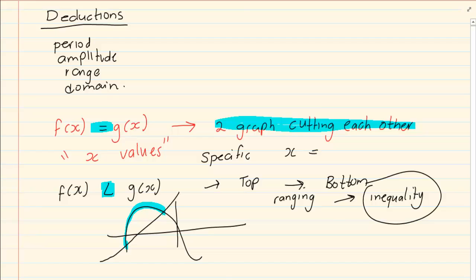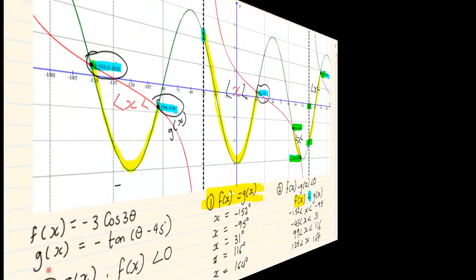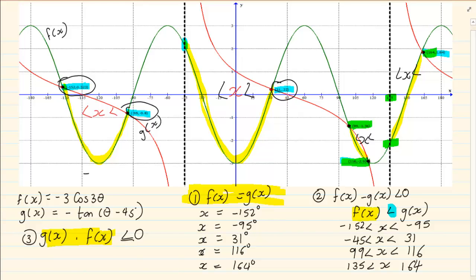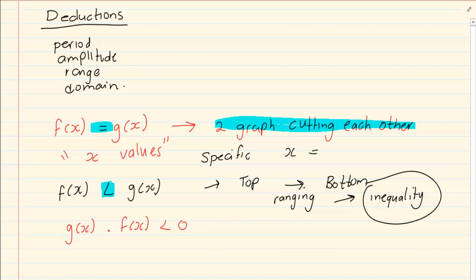Now look at the next style. The next style is where they say f(x) × g(x) is smaller than or equal to 0. Now when they're giving you a multiplication, the multiplication is not exactly the same as the first one where we did an inequality.